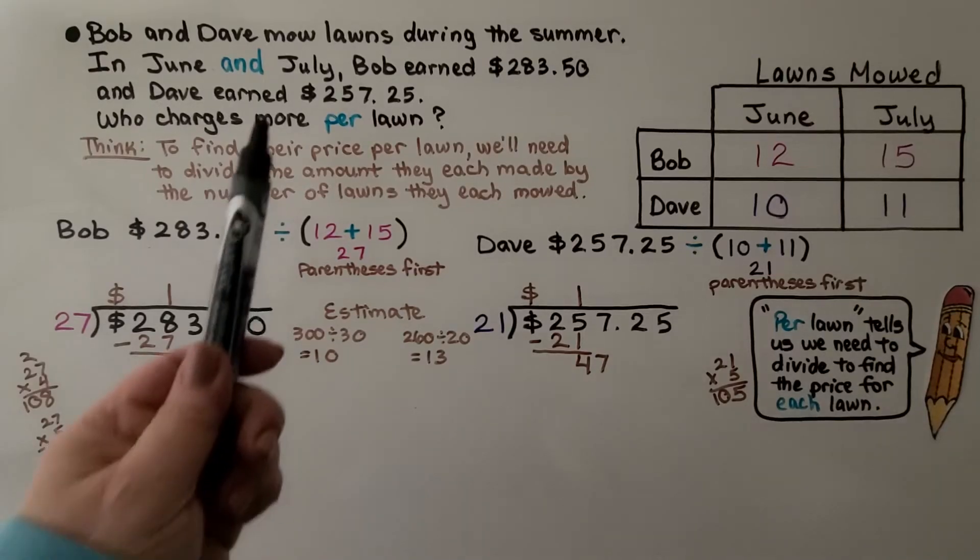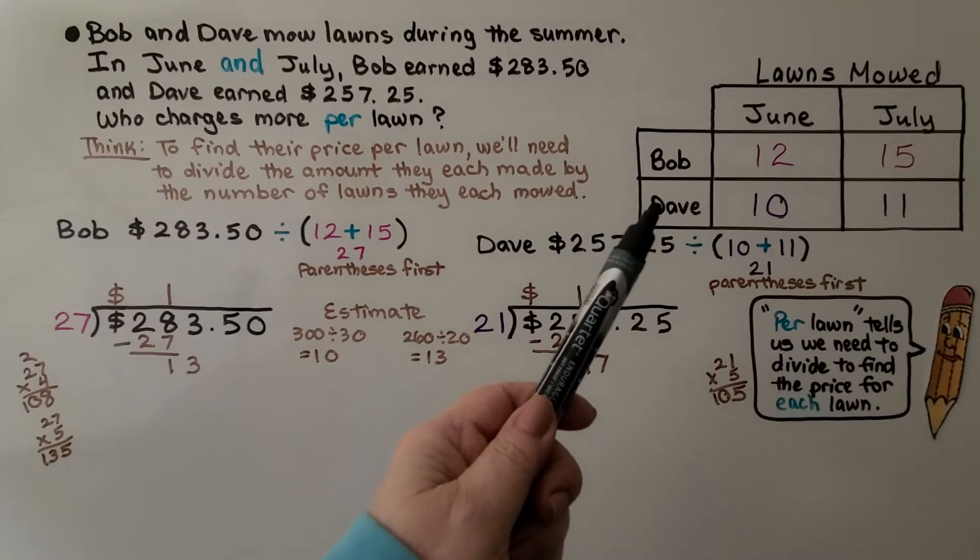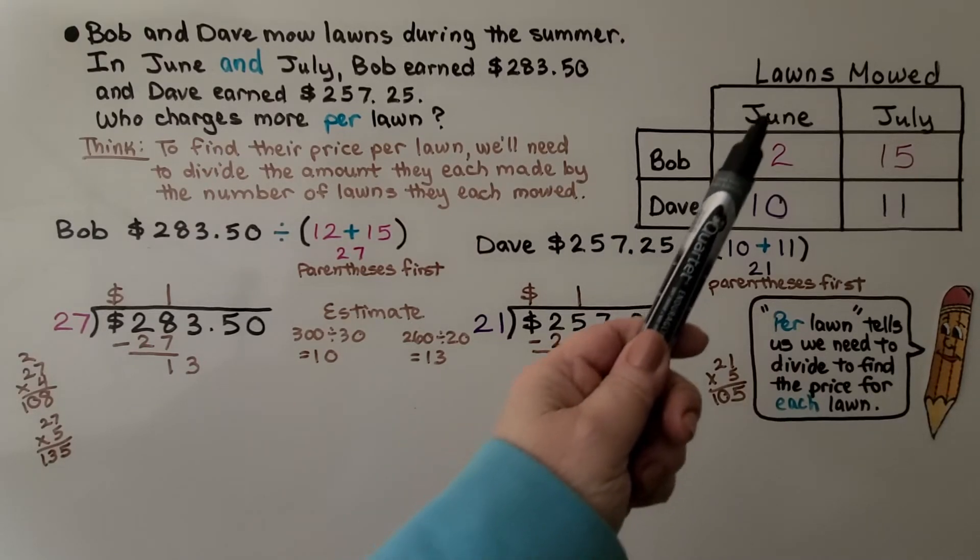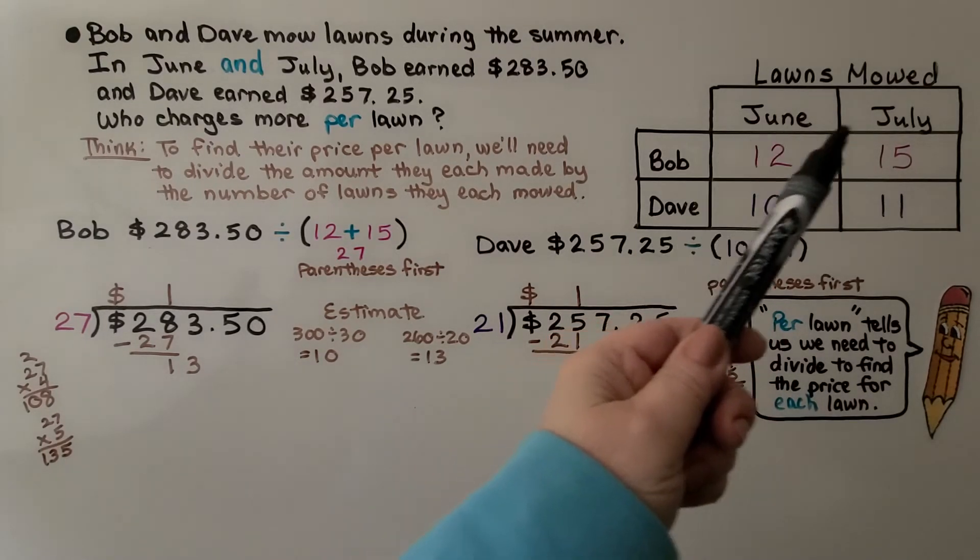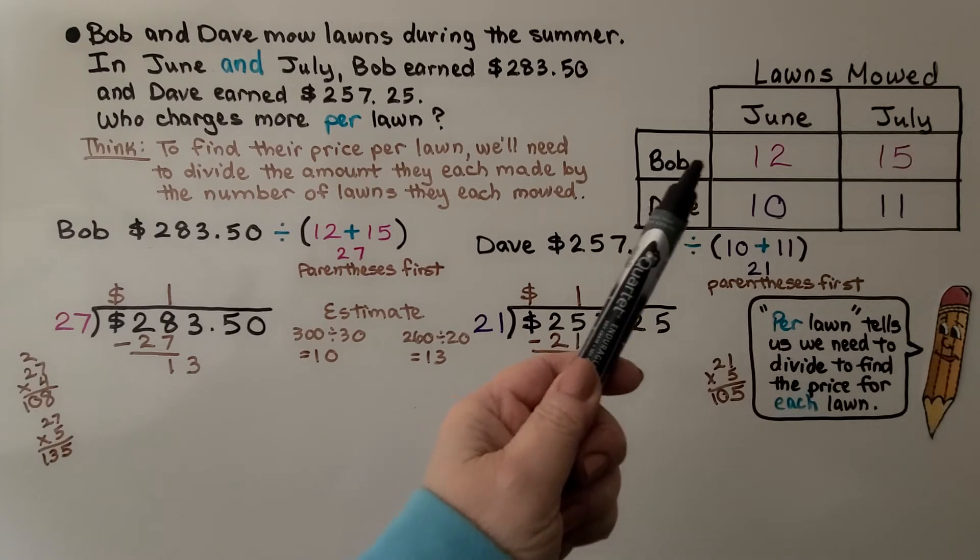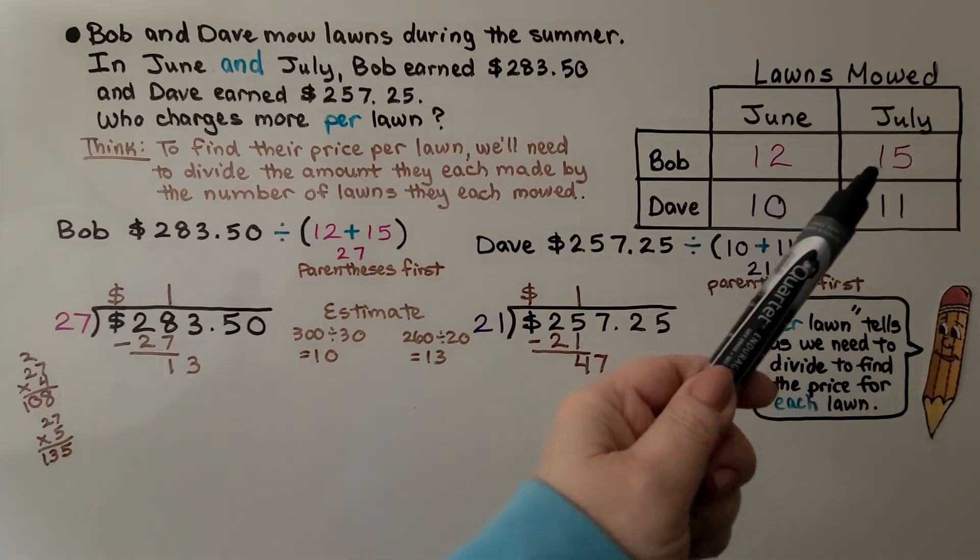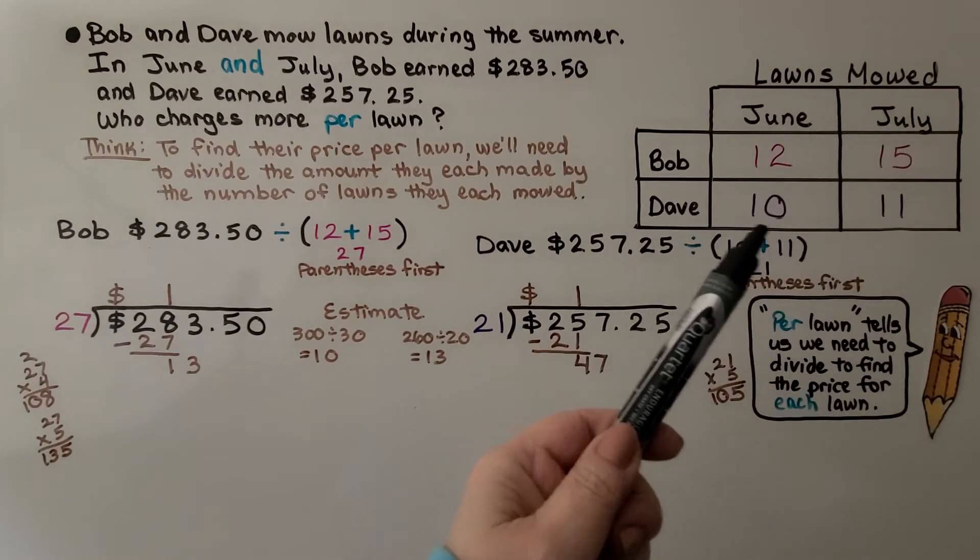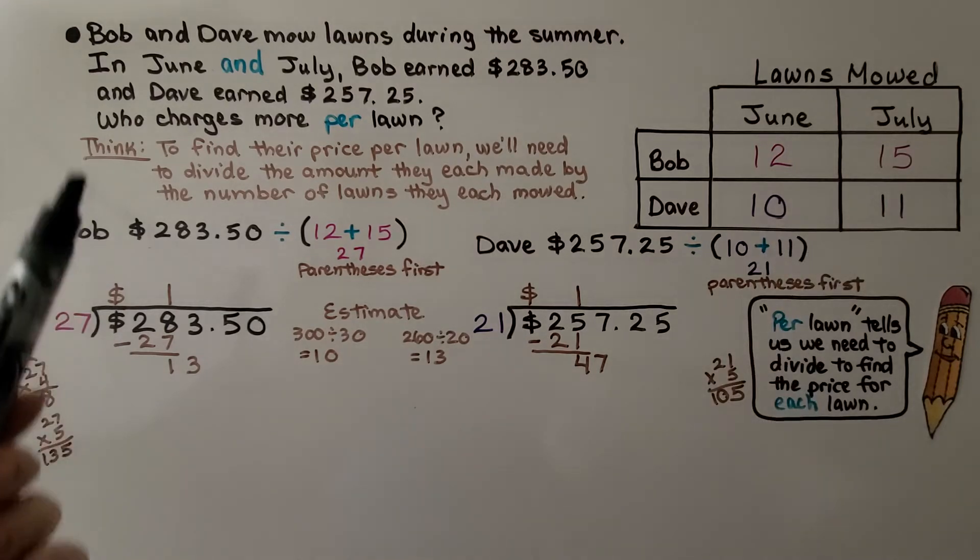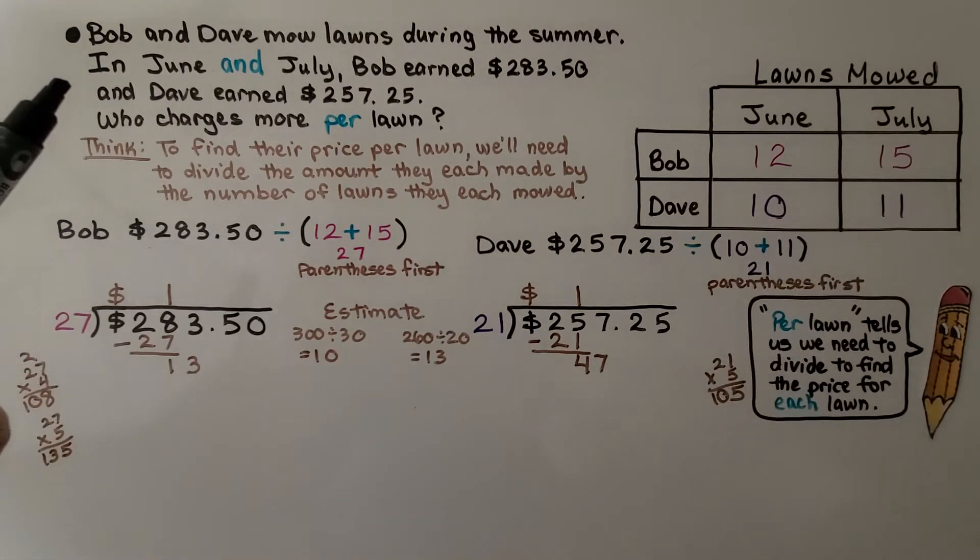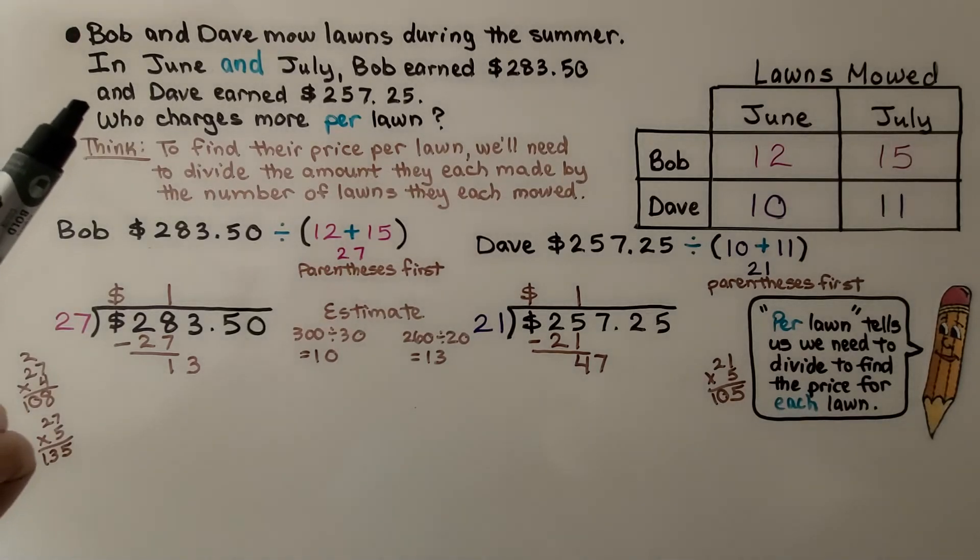Here we have another word problem. You notice we have a table on the side. Let's look at this table. It says lawns mowed, and we have June and July. It's got Bob mowing 12 in June and 15 in July, and Dave mowing 10 in June and 11 in July. Now, let's read the problem. Bob and Dave mow lawns during the summer. In June and July, Bob earned $283.50 and Dave earned $257.25. Who charges more per lawn?